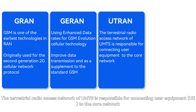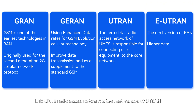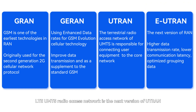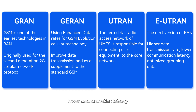UTRAN, the terrestrial radio access network of UMTS, is responsible for connecting user equipment (UE) to the core network. EUTRAN, the LTE UMTS radio access network, is the next version of UTRAN, which can provide higher data transmission rates, lower communication latency, and is optimized for packet data.